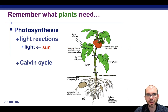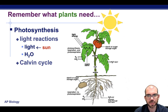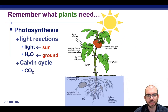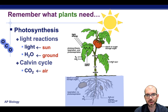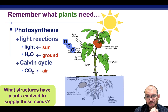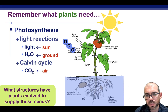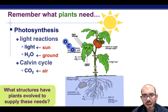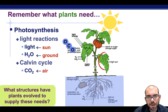The light reactions involve getting light from the sun and getting water from the ground through their roots, whereas the Calvin cycle is all about getting CO2 from the atmosphere. What structures do you think plants have evolved in order to obtain these molecules — to get sunlight, get water, and get air?